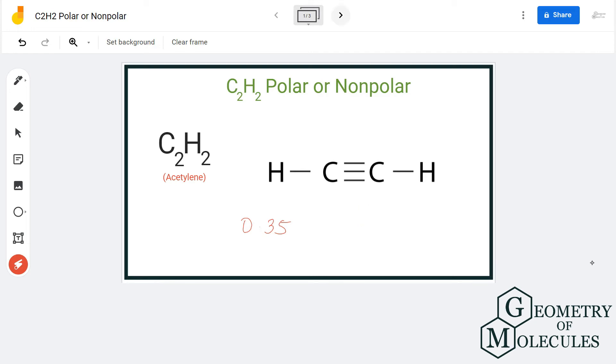Also, if you see the Lewis structure, the atoms are arranged in a linear geometry, which means that the distribution of atoms is symmetrical on both sides. If at all there is a dipole moment in this molecule, it will be cancelled out due to the symmetric distribution.